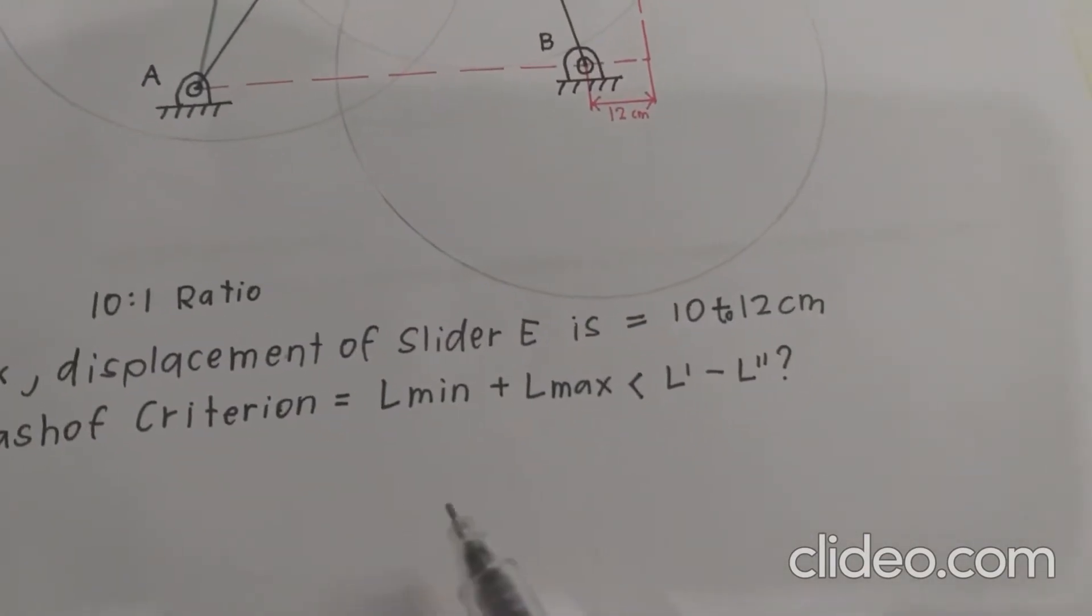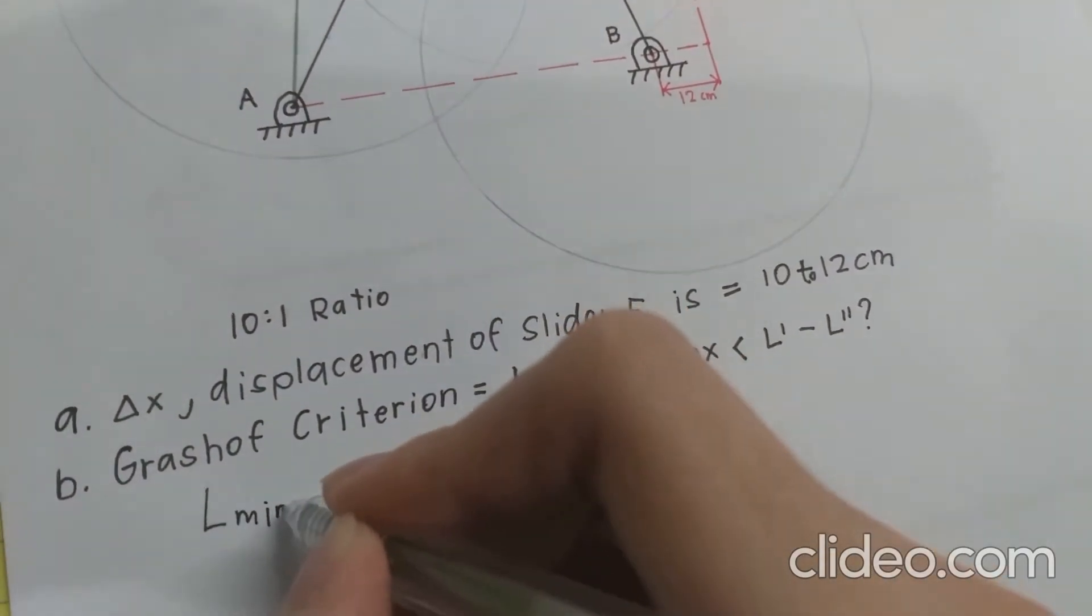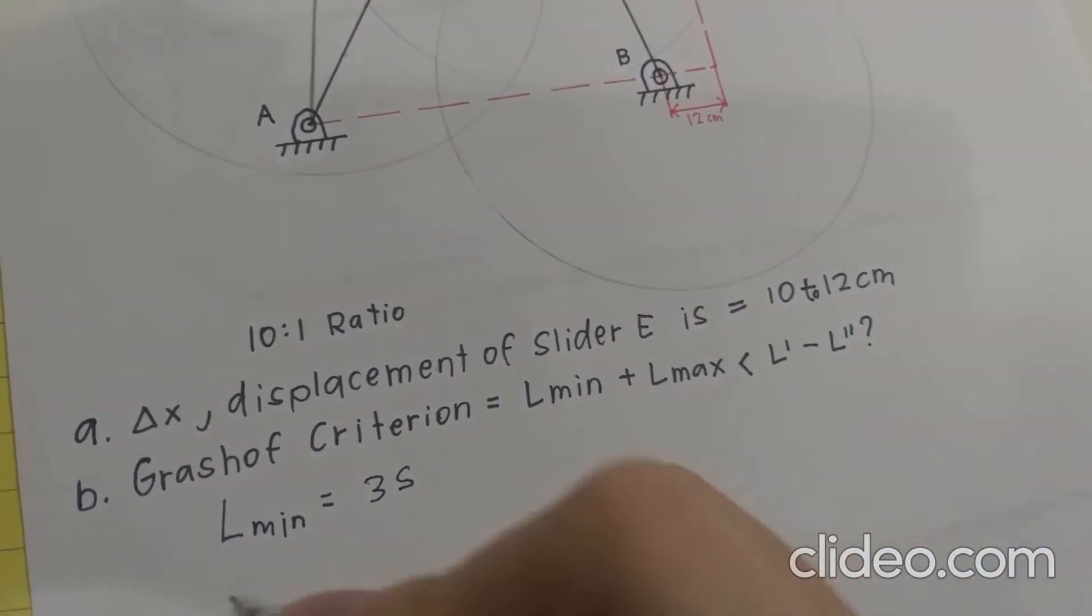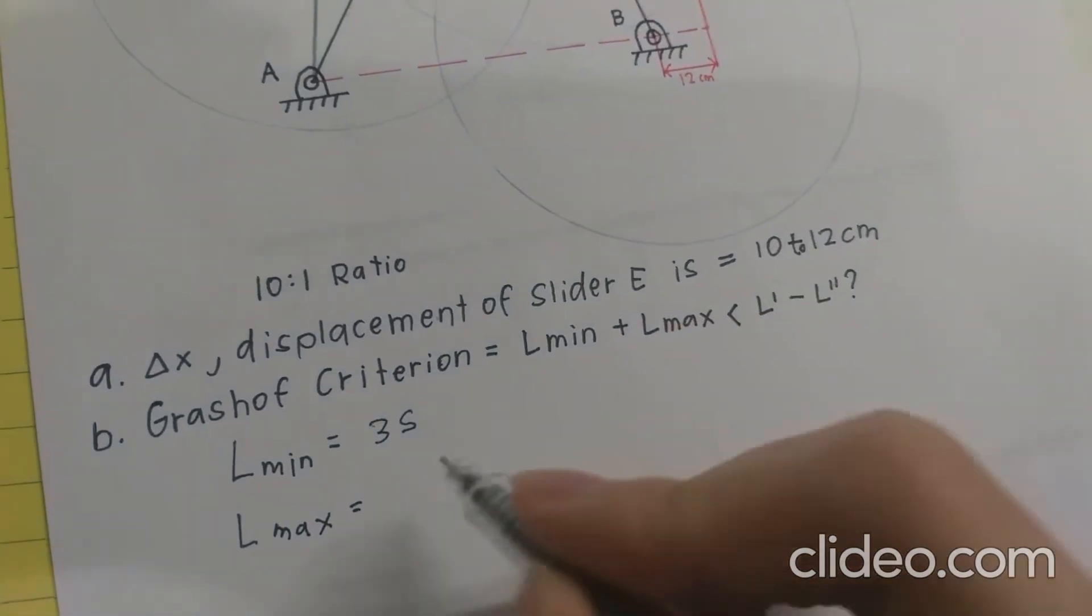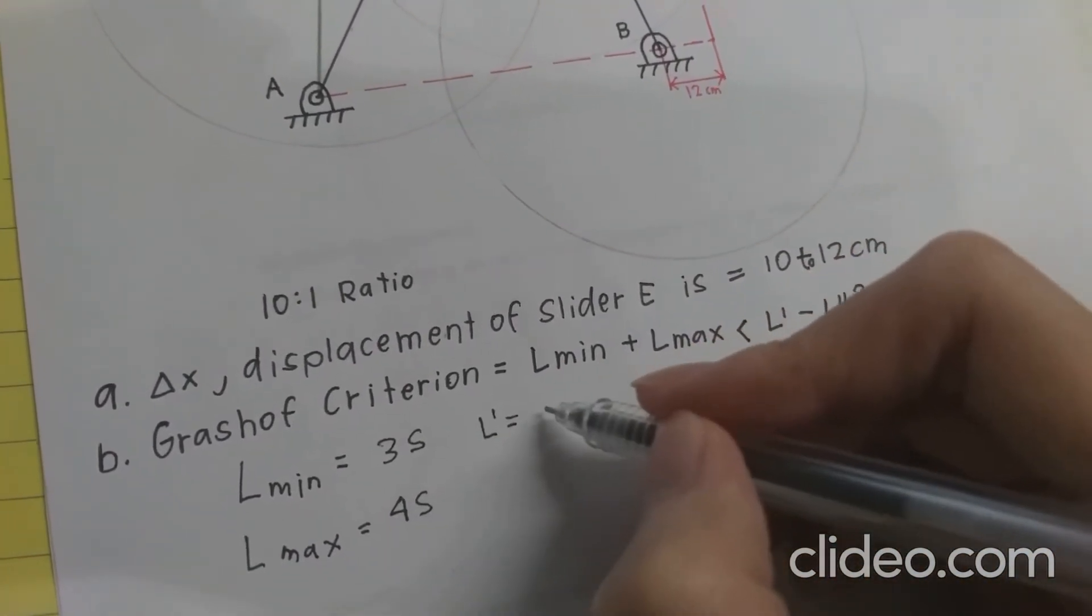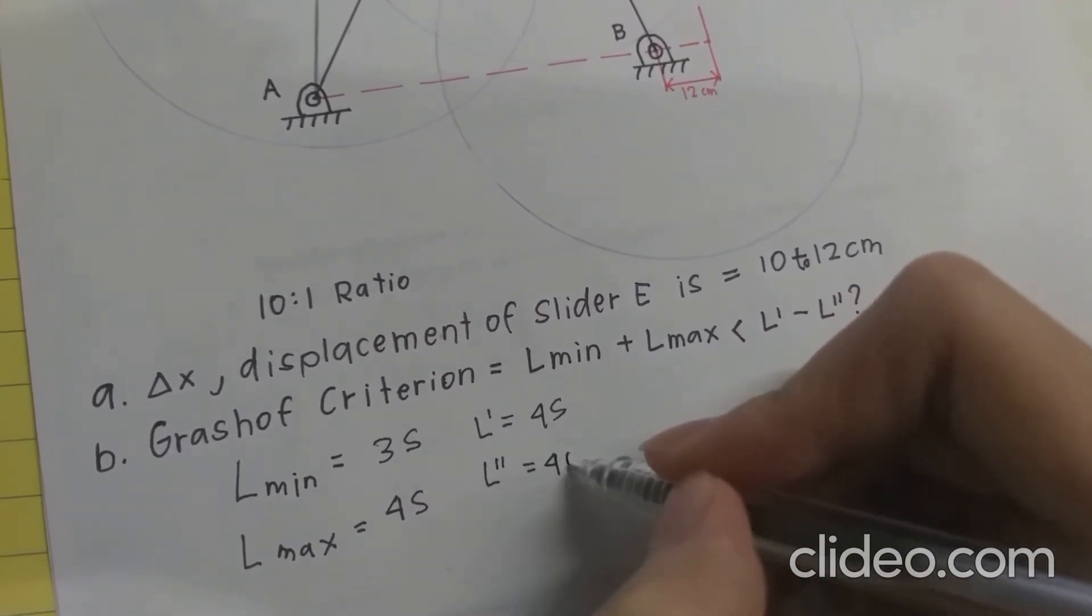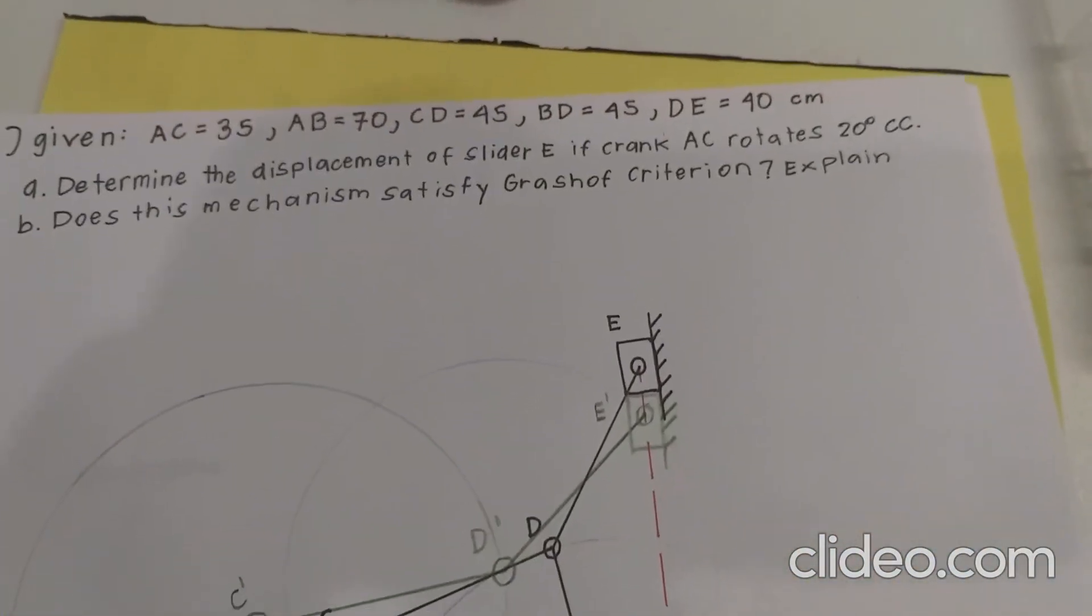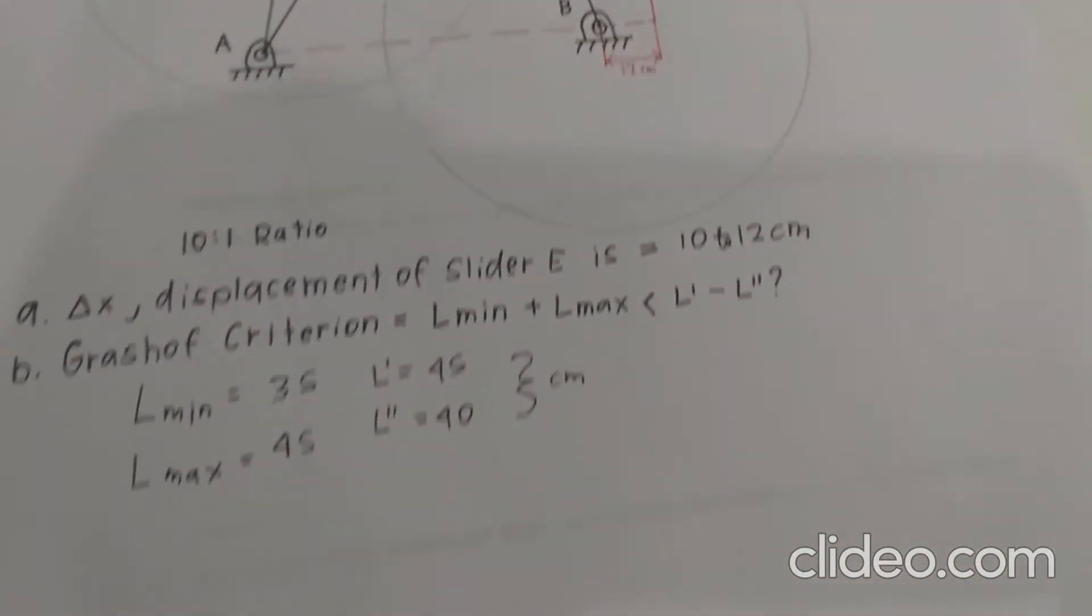So looking at this, we can say that L minimum is equal to 35. And we'll say that one of the L max is equal to 45. And for the L prime, we'll say that it's 45. And for the L double prime, we'll say that it's 40. These are all in centimeters.